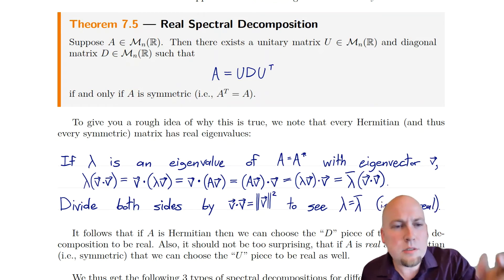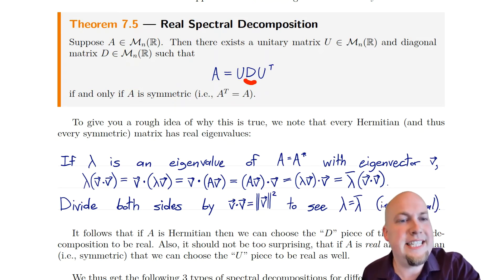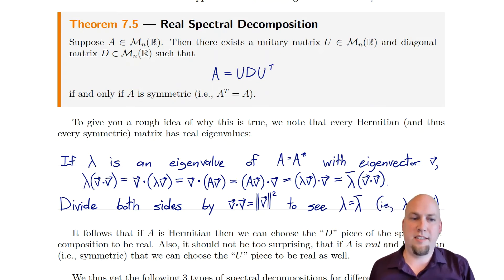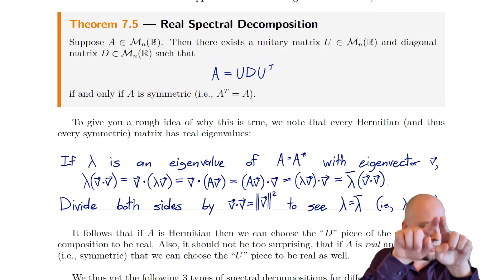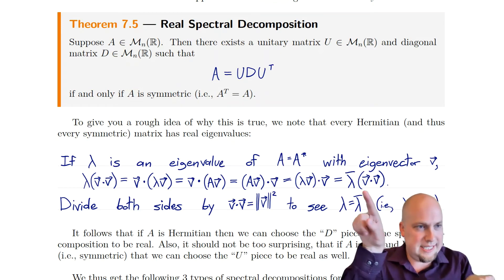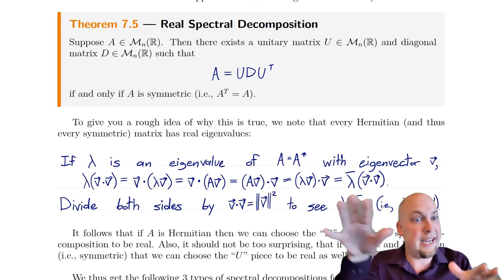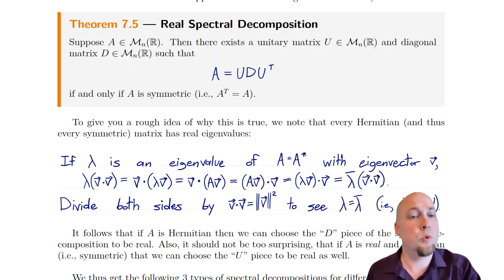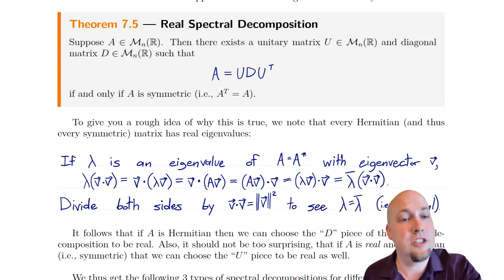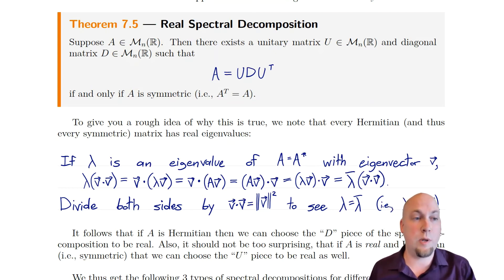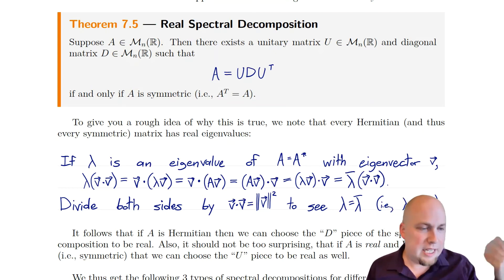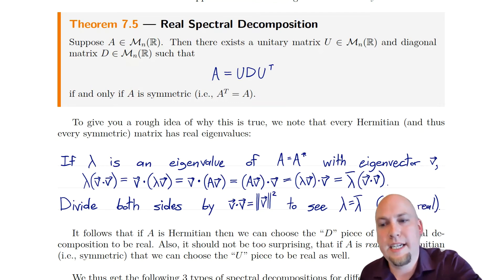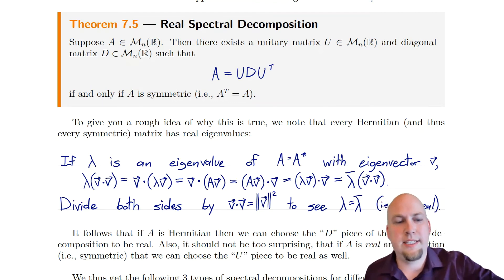This tells us the D piece in the spectral decomposition is going to be real, since you construct the diagonal piece D by placing the eigenvalues of matrix A along the diagonal. There's still some extra work needed to show that U can be chosen to be real as well — that's a more technical argument gone through in the textbook.